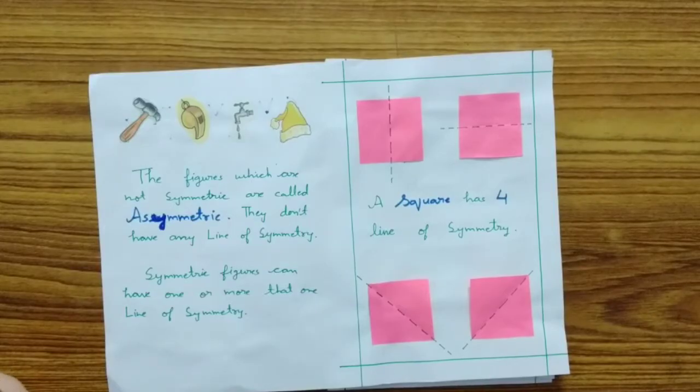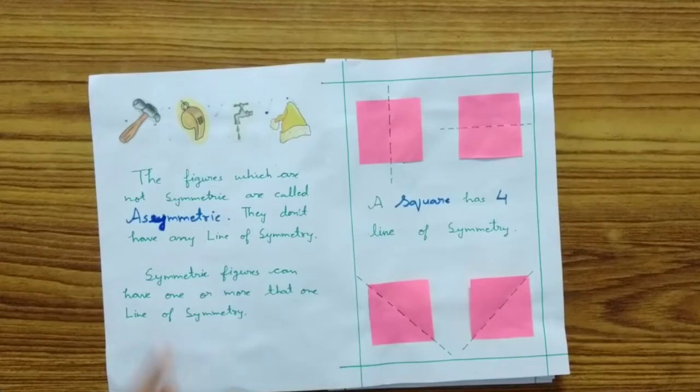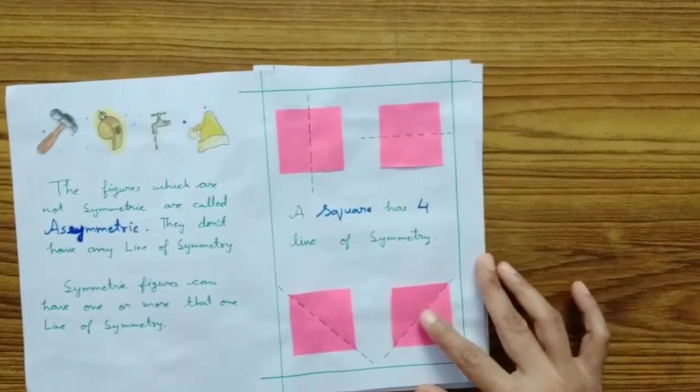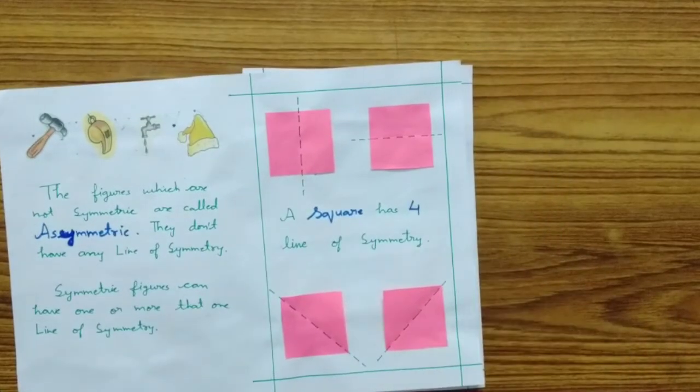The figures which are symmetric can have one or more than one line of symmetry. Let us see with the help of some examples.